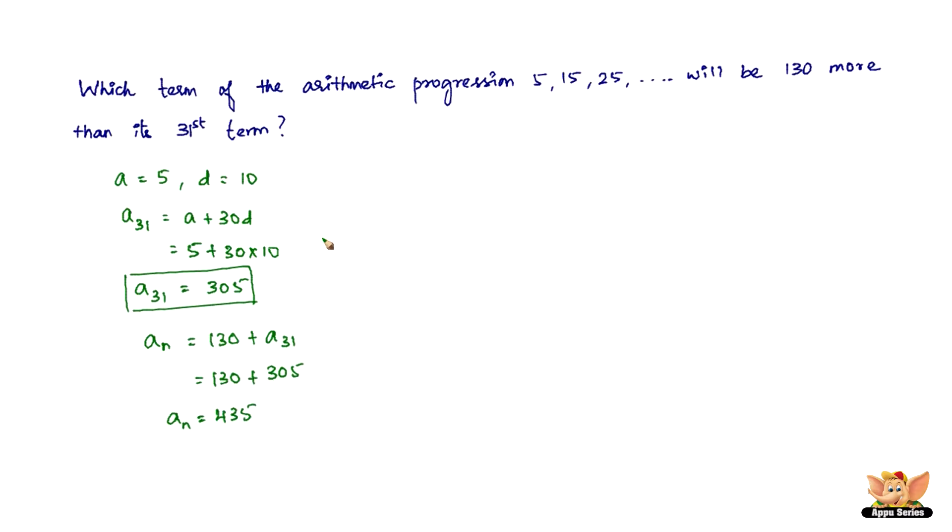We have to find which term is 435. The general term is aₙ equals a plus (n minus 1) times d. We know aₙ is 435, a is 5, and d is 10. So 435 equals 5 plus 10(n minus 1), which gives us 435 equals 10n minus 5. Therefore, 10n equals 440 and n equals 44.